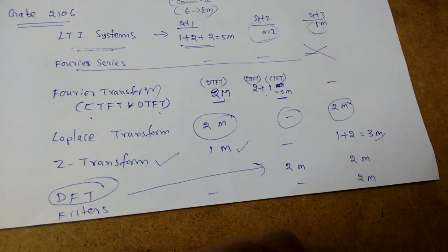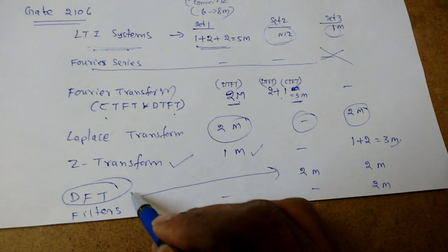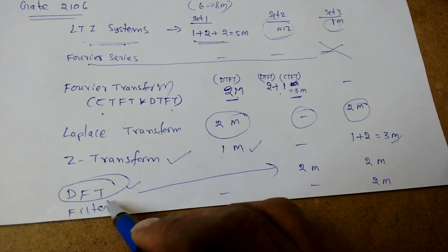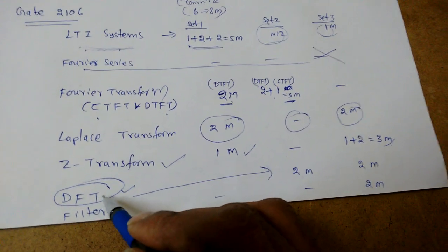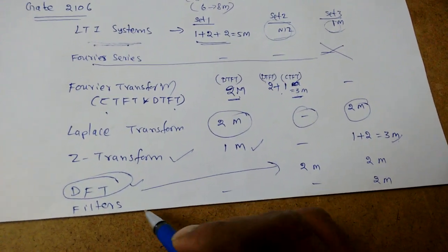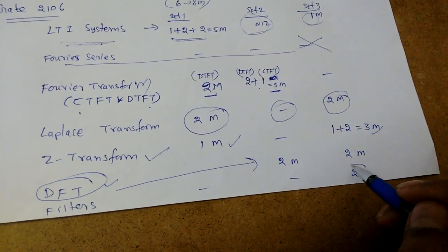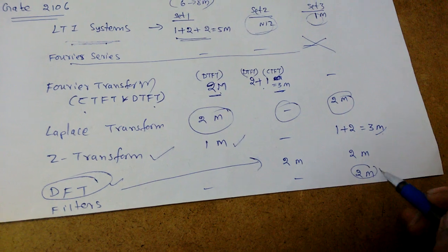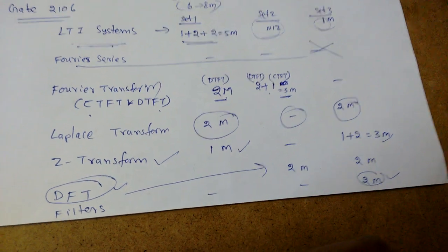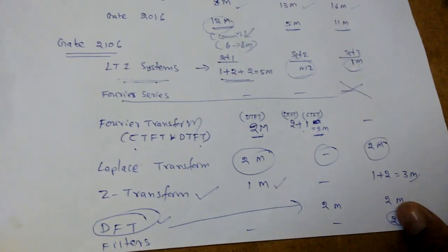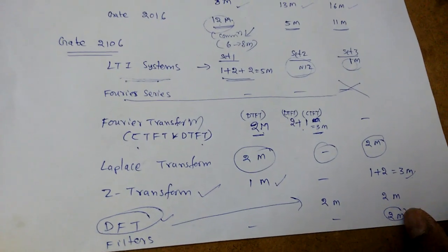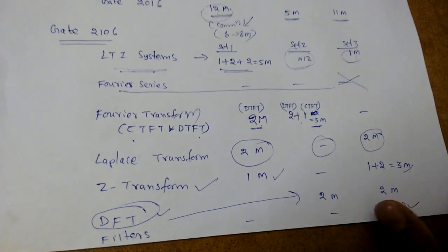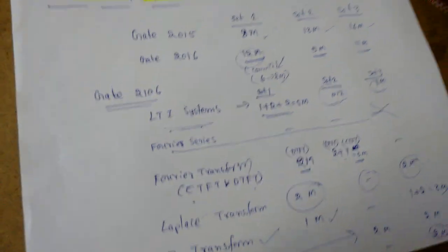We frequently get at least one question from DFT, so concentrate on DFT — we can learn it quickly. From filters we got two marks from Set 3 and two marks from another set. This is the marks-wise performance summary.